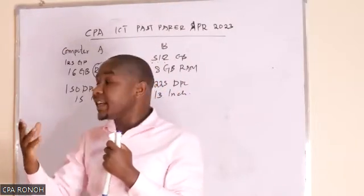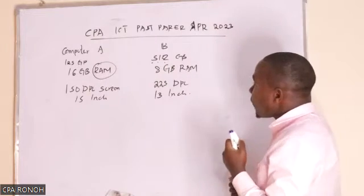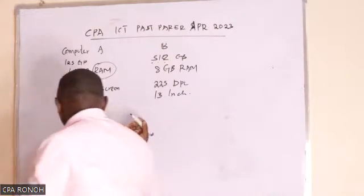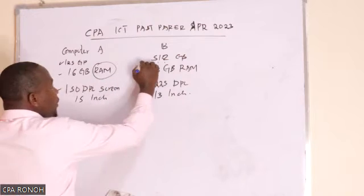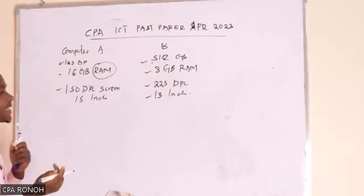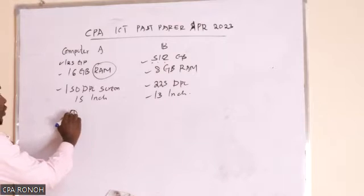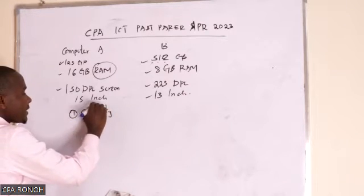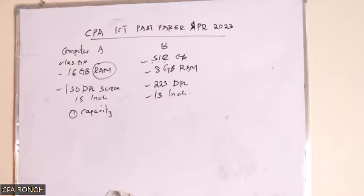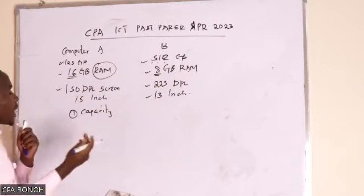If you are a good student who wants to pass the ICT paper, what exactly is the examiner asking? They need the strengths for A and for B. Looking at these features, you can talk of capacity. The first strength — look at the RAM of the two computers.